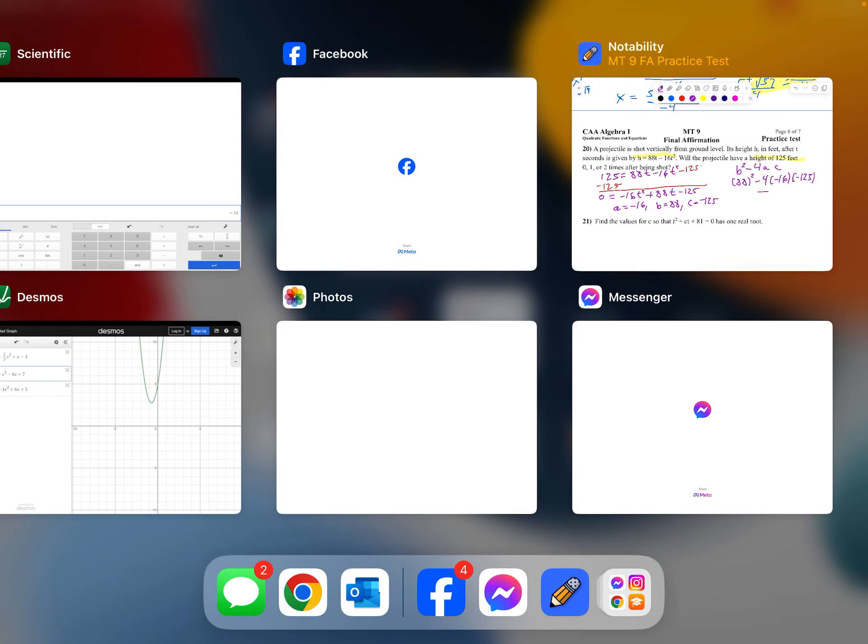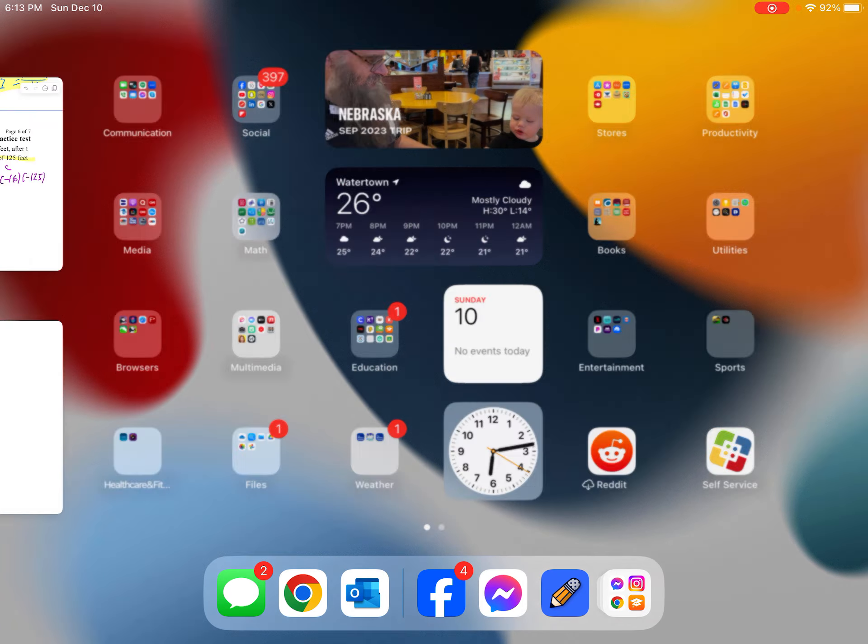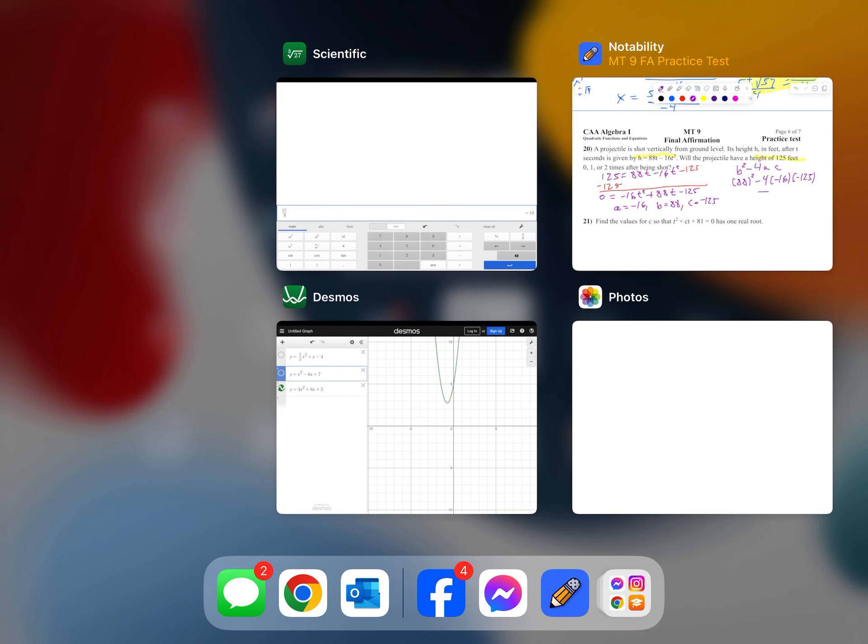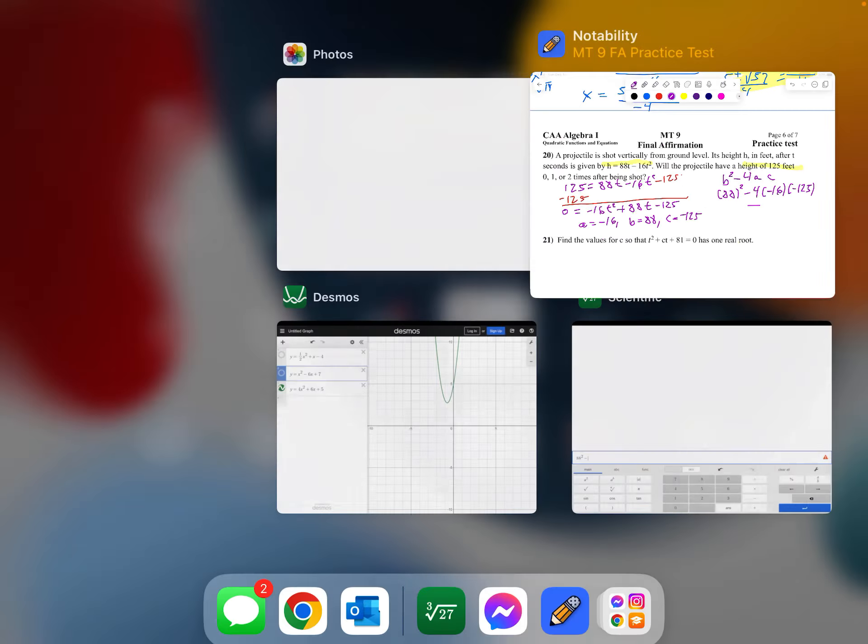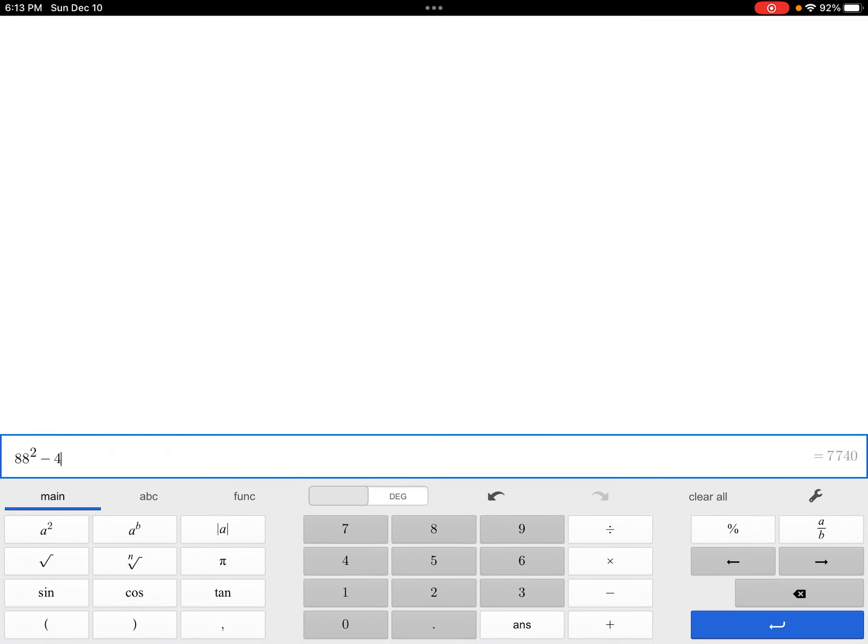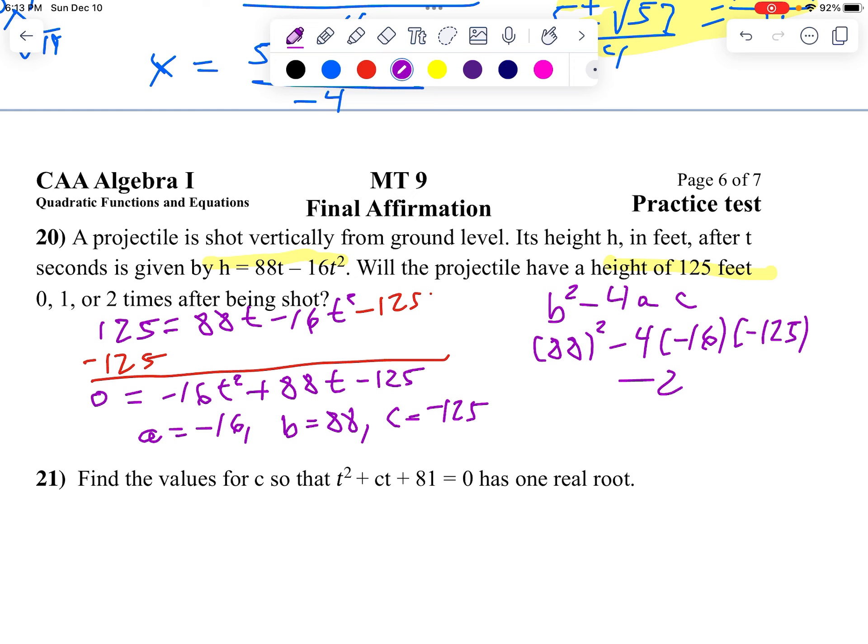Now I'm going to use my calculator. Let's do 88 squared minus, might as well just do the whole thing at the same time, minus 4 times 16 times 125. And we get a negative 256. Negative 256 means it will never be at that height. I don't like 0. I'm going to say it's never going to be at that height.